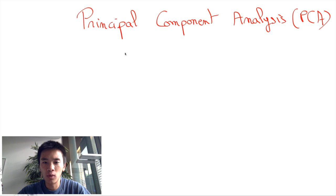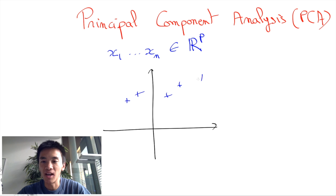Typically data in this case will be some very high dimensional vectors x1 until xn in some vector space RP, where p is typically large.